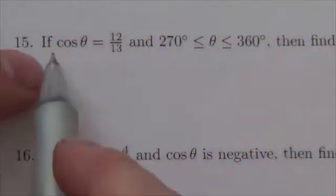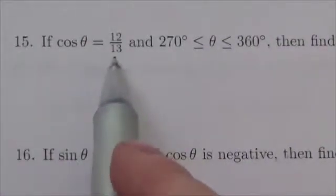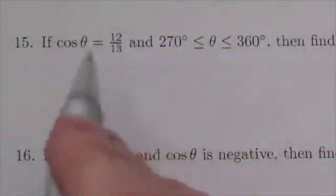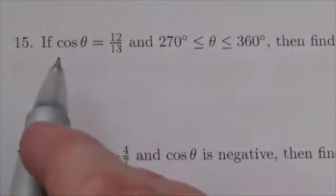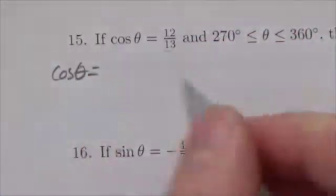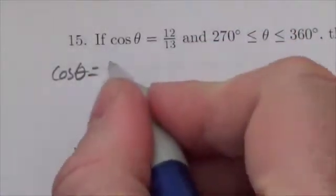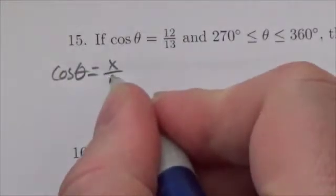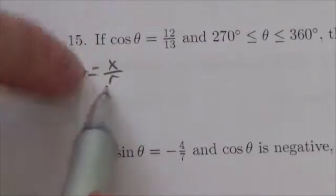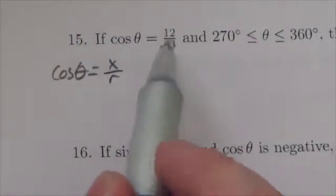This is a good question. If the cosine of theta is equal to 12 over 13, let's think about what information I'm giving you here. When you think that the cosine of theta, the way we're defining cosine theta is we're defining it as the value of x of a point on the terminal arm of an angle divided by the r value. This is telling us something.